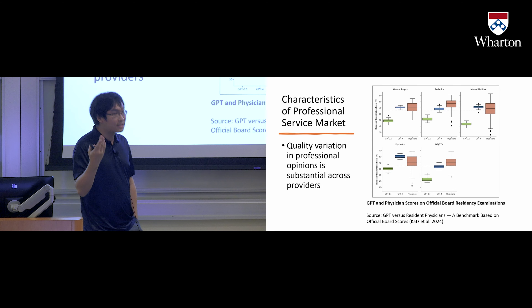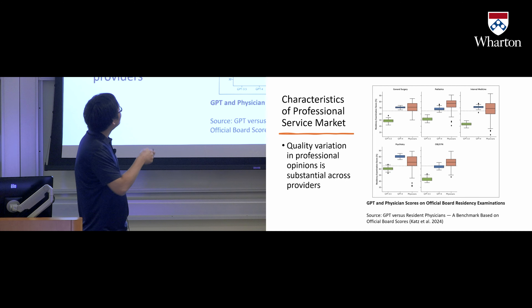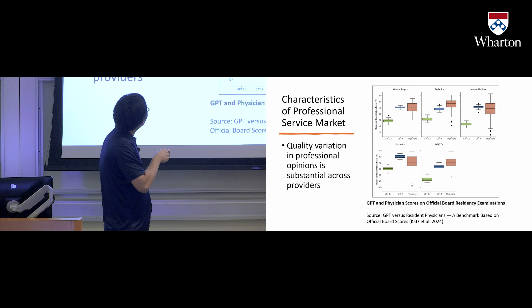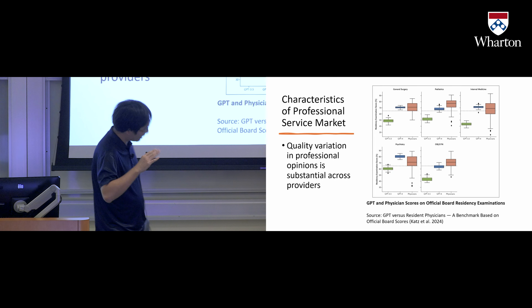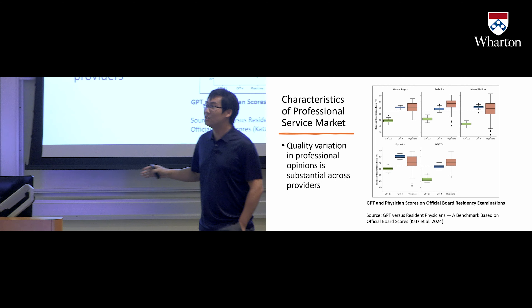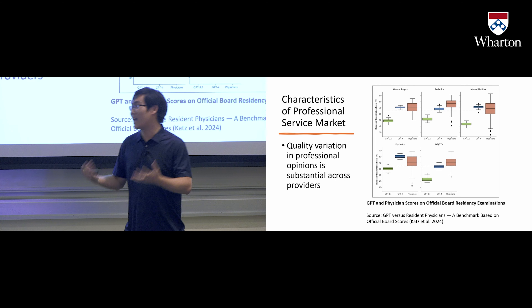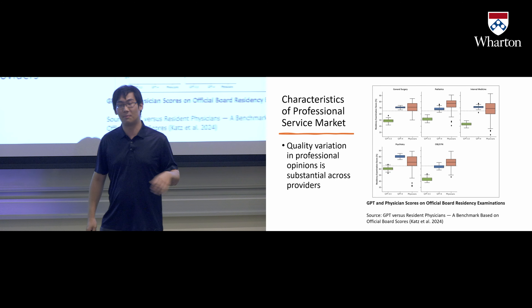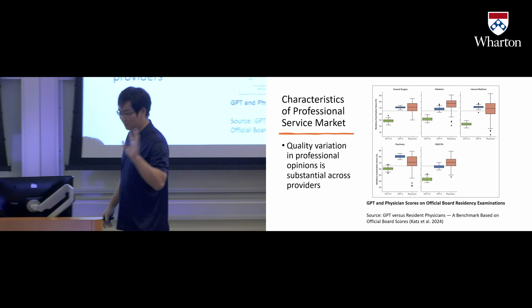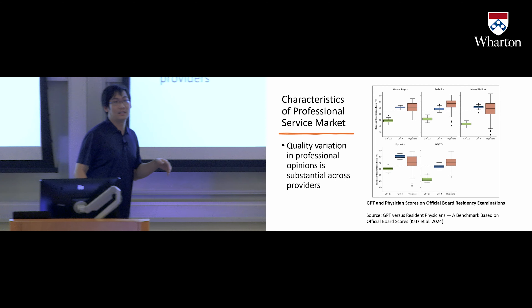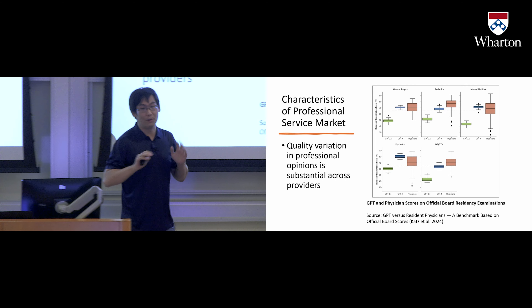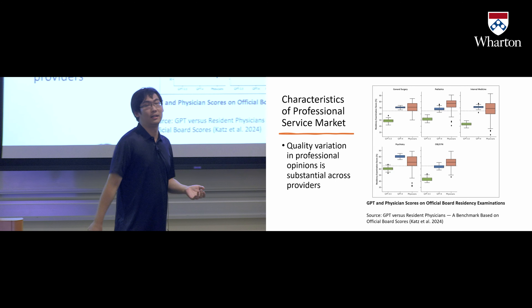Where is ChatGPT on this graph? We can see that AI can beat some of the lower performers, but usually ChatGPT or AI cannot beat the best-performing human providers. So basically, ChatGPT or related generative AI assistants can help you reach an intermediate level — somewhere between the lowest and the highest quality providers.